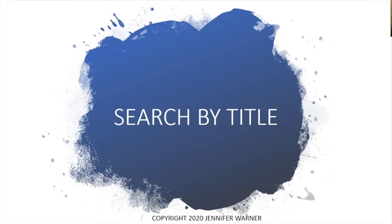The next thing is searching by title. Place, keyword, and subject are the more common search types. Searching by title is less common because most people don't have the title of an item they're looking for. However, with a title search you can also just type in a word and it will search for that word as part of the title of what you're looking for.